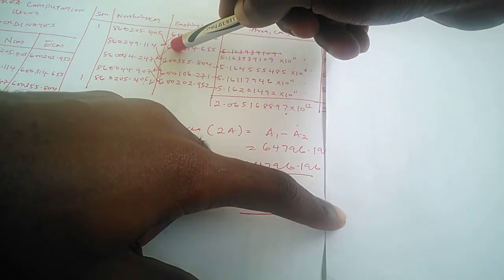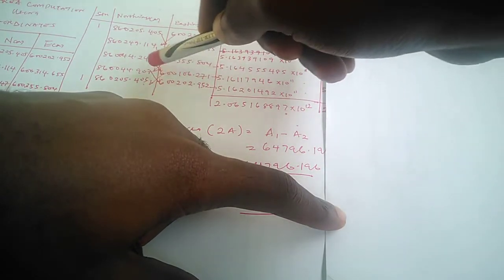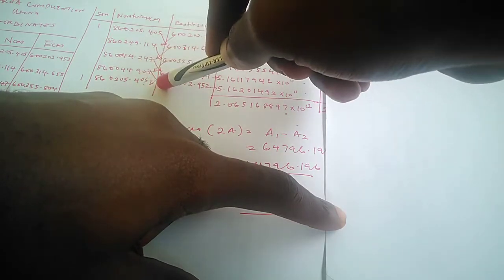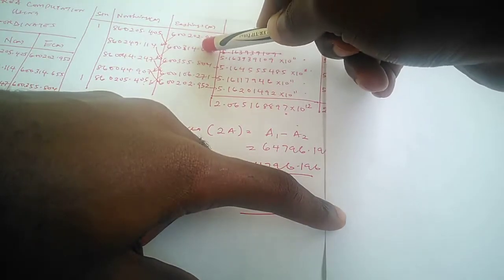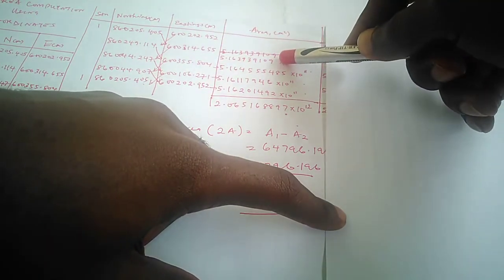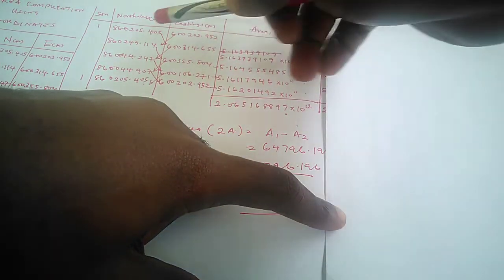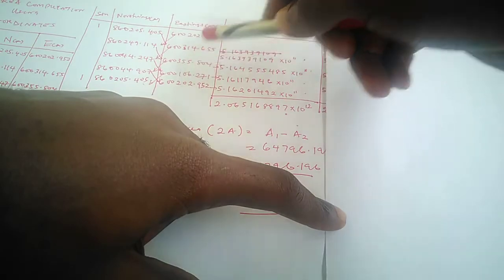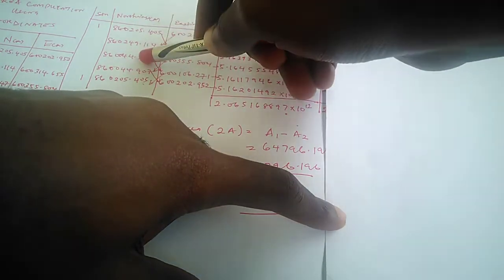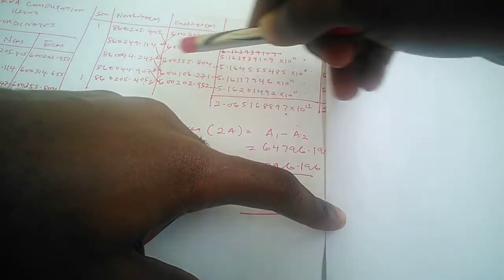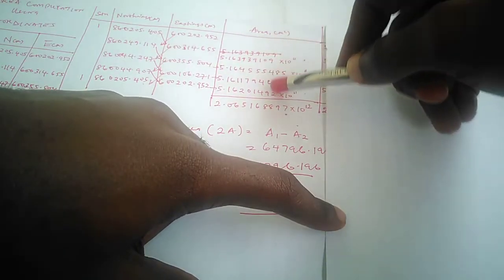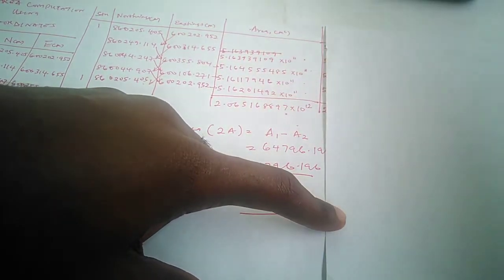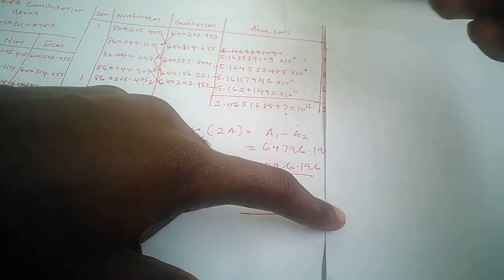As I told us earlier, there is a multiplication going down. When this first northing multiplies the second easting, we get the first area here—the partial area actually. This northing multiplies the third easting, we get this value. That's how we got the values here.